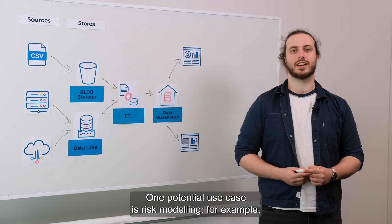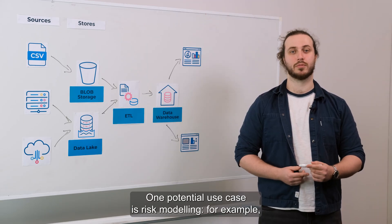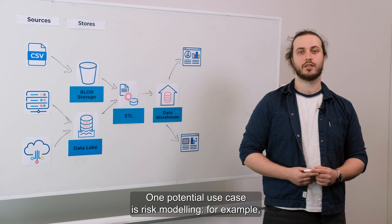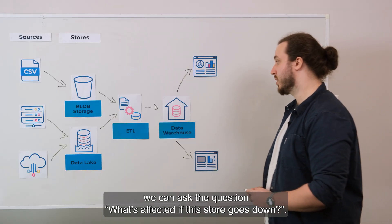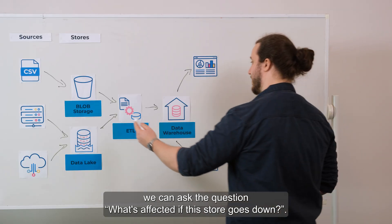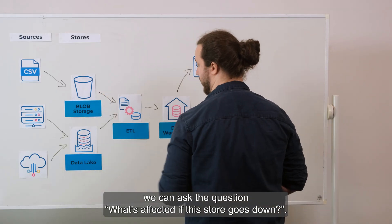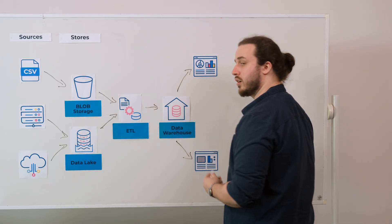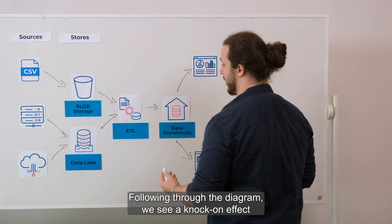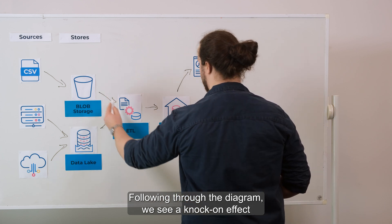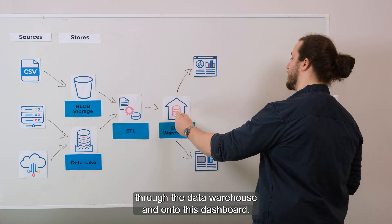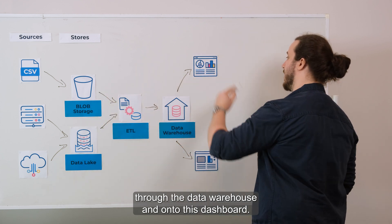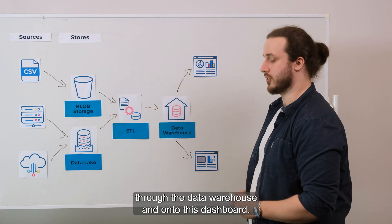One potential use case is risk modeling. For example, we could ask the question: what's affected if this store goes down? Following through the diagram, we see a knock-on effect through the data warehouse and onto this dashboard.